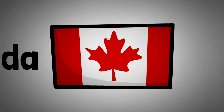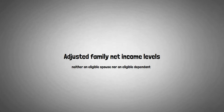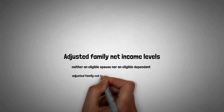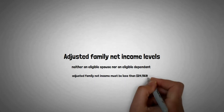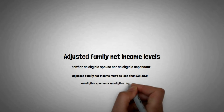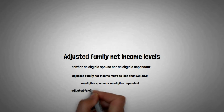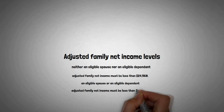Now we look at the concept of adjusted family net income levels. If you are neither an eligible spouse nor an eligible dependent and you want to claim basic CWB, then your adjusted family net income must be less than $24,569. However, if you are an eligible spouse or an eligible dependent and you want to claim basic CWB, then your adjusted family net income must be less than $37,176.